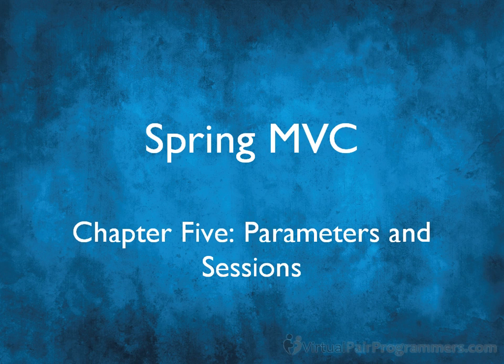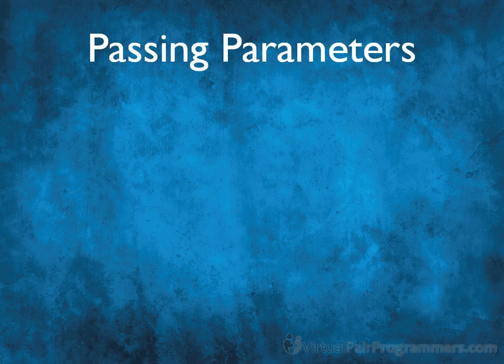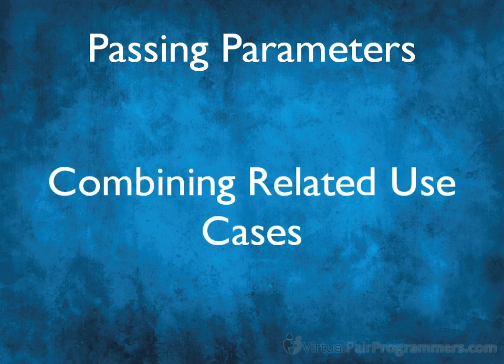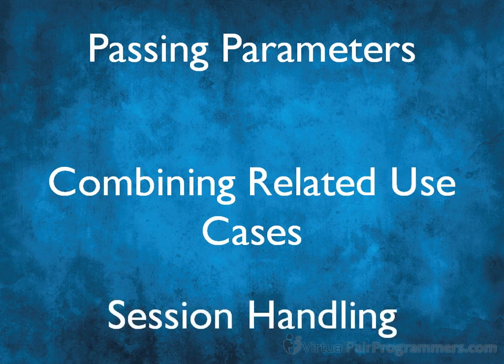In Chapter 5, we're going to be adding to the basic work we've done so far by looking at parameters and sessions. We'll begin by adding a find-by-author use case, and this will give us a chance to pass a string parameter from our web page to our controller. Once our second use case has been written, I'll show you that it is possible to combine related controllers into a single class, and then we'll look at how to handle sessions.